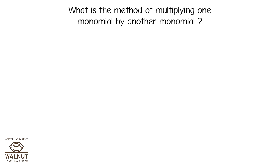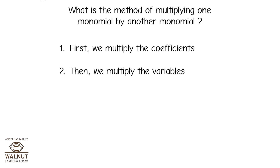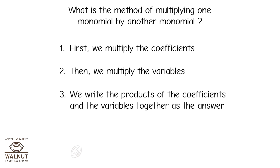First, we multiply the coefficients. Then, we multiply the variables. Third, we write the products of the coefficients and the variables together as the answer.